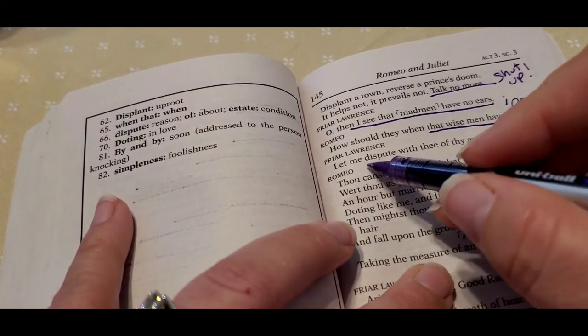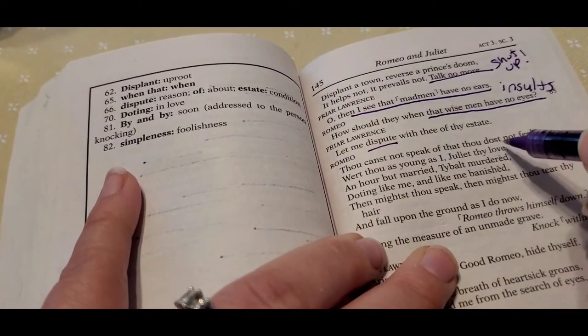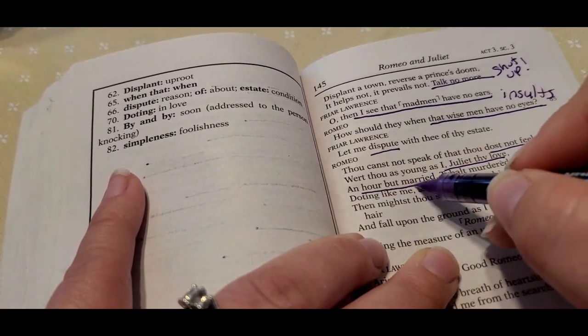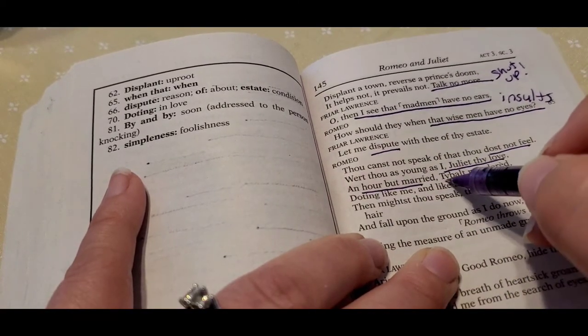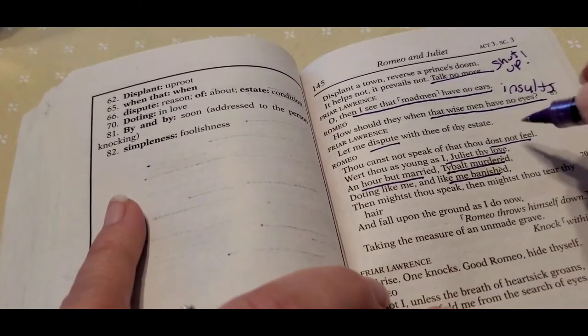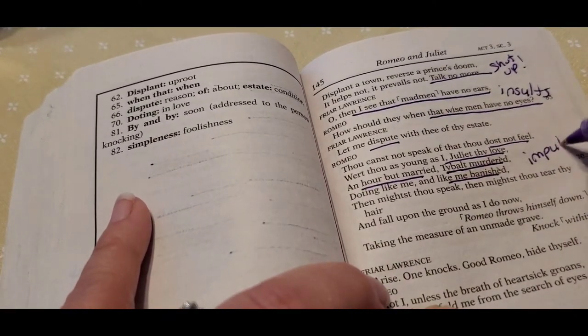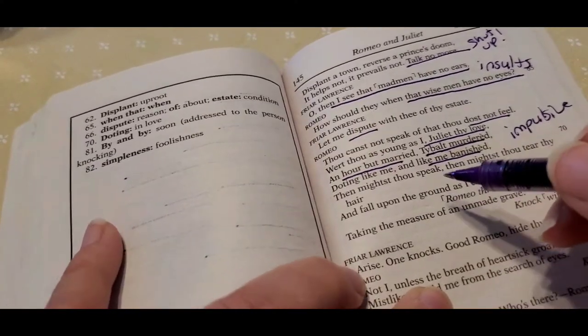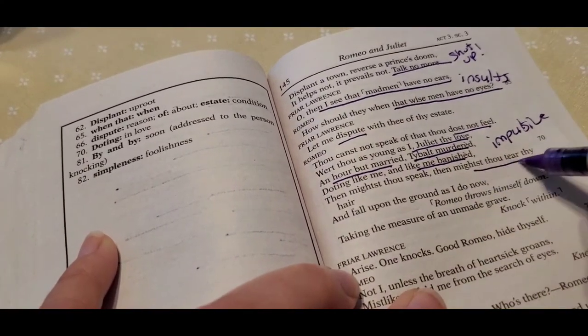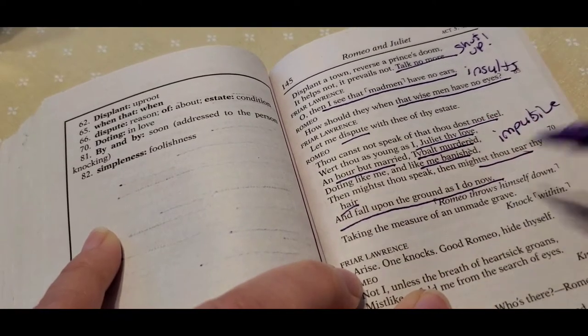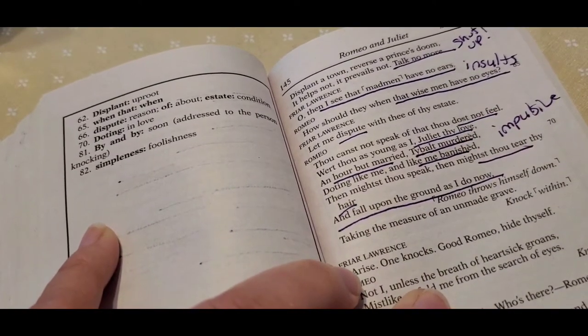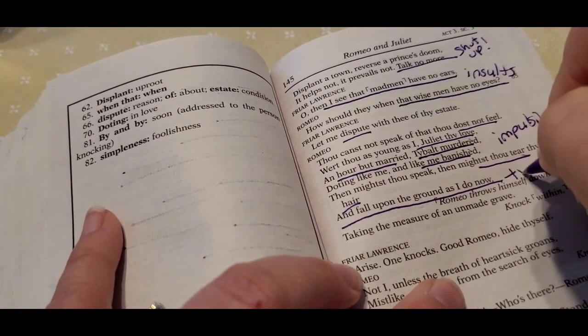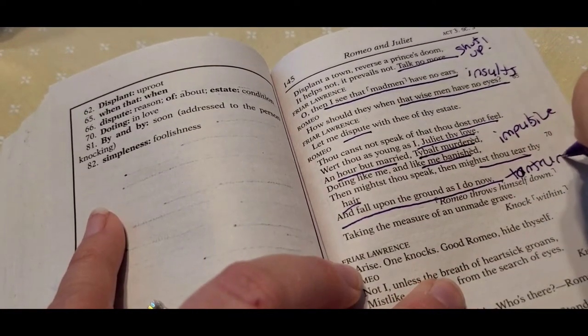And he's like, so he goes, well, let me dispute you. And he goes, you can't talk what you don't feel. You don't know what it's like to be in love. We were an hour murdered, an hour married, and then I'm a murderer and then I'm banished. Again, impulsiveness. And he goes, you know, then maybe you could speak if you understood this, but I'm going to throw my, I'm going to tear my hair and throw myself on the ground. As I do now, he literally puts himself on the ground and throws a tantrum. He's crying and wailing like a baby.